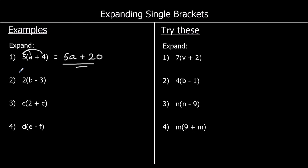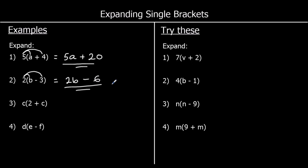For the second one, 2 times b we just write as 2b. And 2 times negative 3 is going to be negative — a positive times a negative is negative — and 2 threes are 6. So the answer is 2b minus 6.